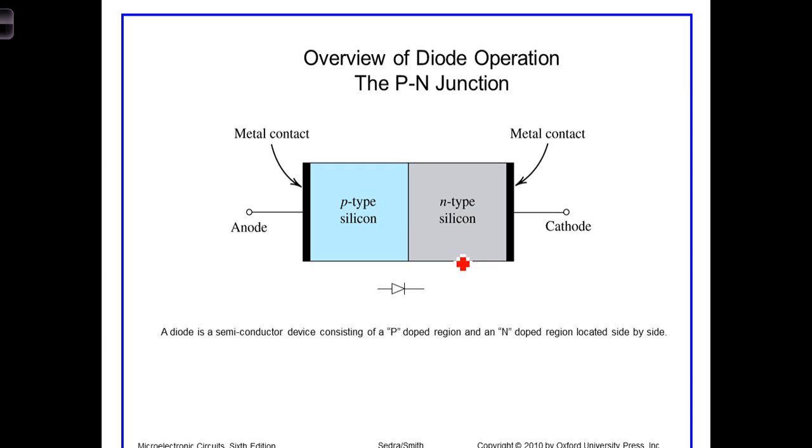But we'll also see that P-N junctions exist and are fundamental to the operation of bipolar junction transistors, or BJTs, and also play an important role in understanding how field-effect transistors work.